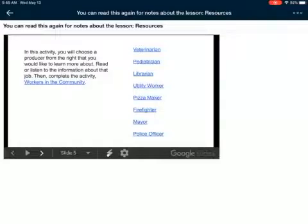In this activity, you will choose a producer from the right that you would like to learn more about. Read or listen to the information about that job. Then complete the activity workers in the community. Again, I'm not going to be able to open up these links, but what these do is they bring you to different websites just to learn more about these different people. And then you can also click on that link in workers in the community just to do some thinking about those kinds of jobs. But there's veterinarian, pediatrician, librarian, utility worker, pizza maker, firefighter, mayor, police officer.